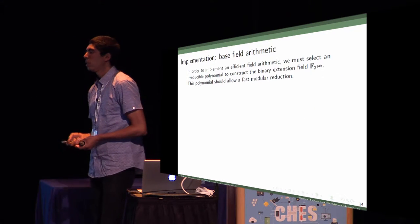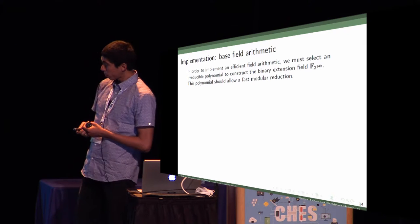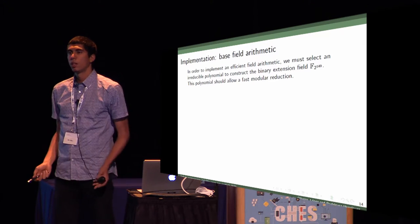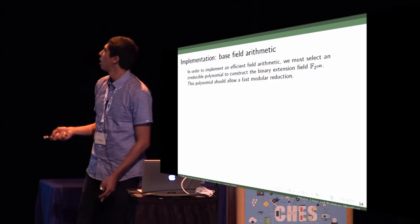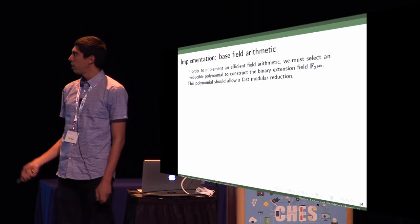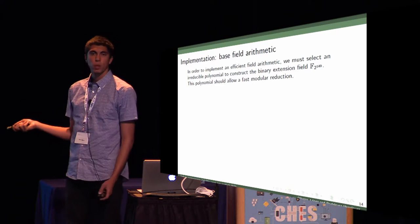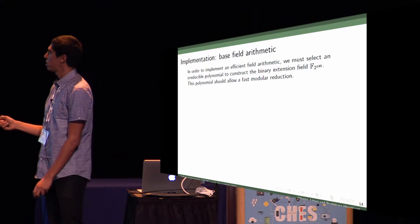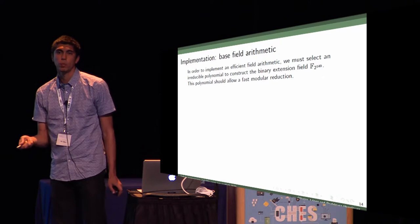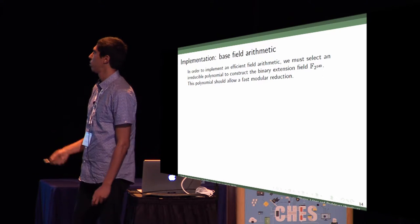First of all, let's see our base field arithmetic. We want to implement efficient field arithmetic. The first thing to choose is a polynomial to construct our field F2 to the power of 149. This polynomial should allow fast modular reduction, because this is a very important operation in field arithmetic. After doing multiplication and squaring, we need to perform modular reduction.